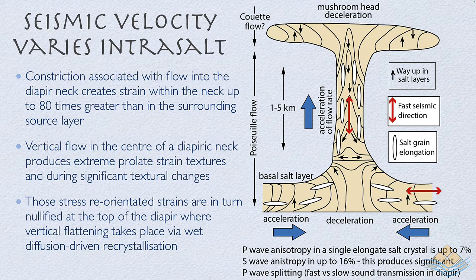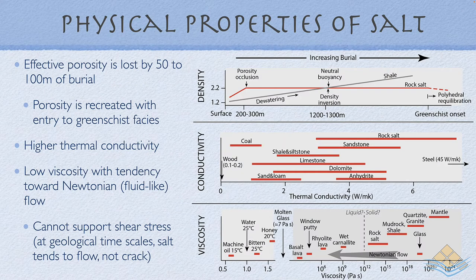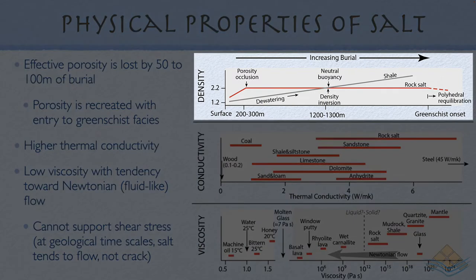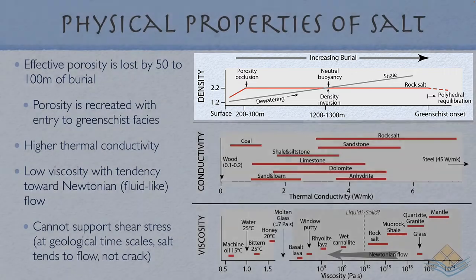It is not just the recrystallization and flow textures that give salt anisotropic and unusual properties. Salt is an unusual sediment in that it typically loses its porosity by a hundred to a few hundred meters, and we don't see porosity recreated until salt attains greenschist facies, where a process of polyhedral recrystallization takes place, as discussed in the meta-evaporite chapter.